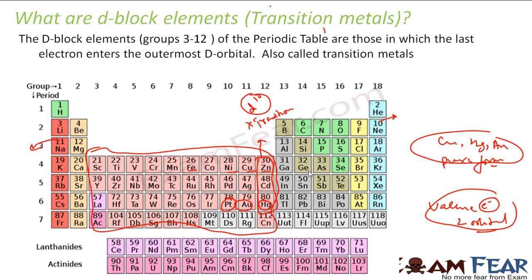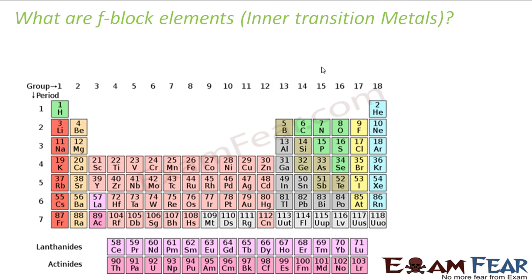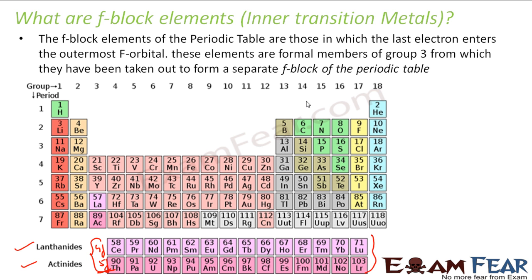D block elements are nothing but group 3 to group 12 — that is my D block. The last electron enters the outermost D orbital. If you talk about the F block, that whole section is my F block, where the last electron enters the outermost F orbital. We have lanthanides (4f series) and actinides (5f series), and we'll talk about them in detail.